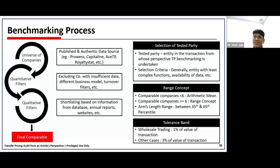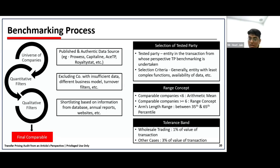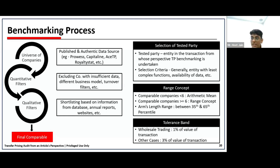There is also a concept of tolerance band — not as frequently used, but it is prescribed under the rules. It states that if the international transaction entered and the arm's length price have a small variance, you can adjust the international transaction by 1% for wholesale trading transactions and 3% for other transactions. Tolerance band is only for slight acceptable deviations of an international transaction from the computed ALP value.